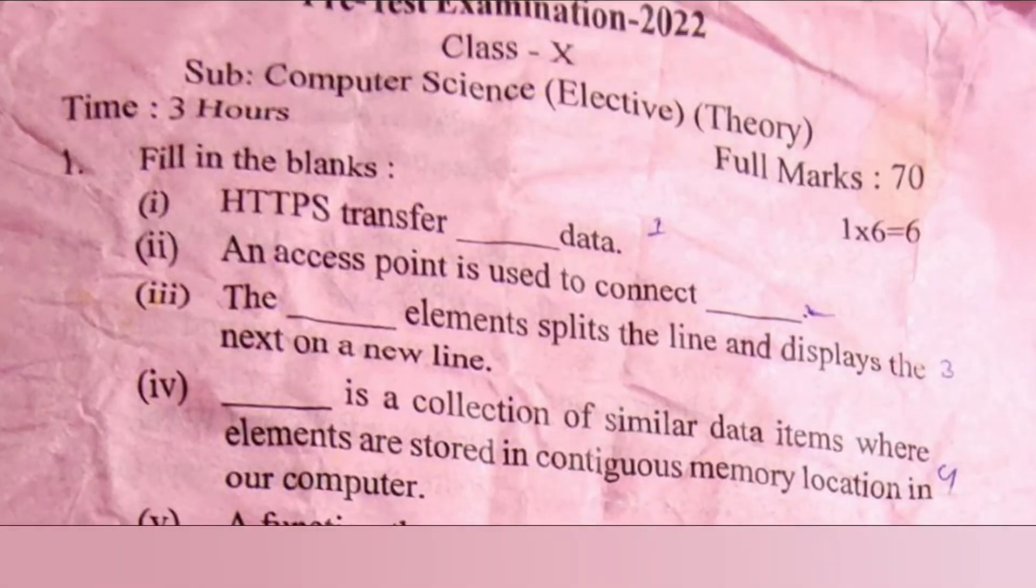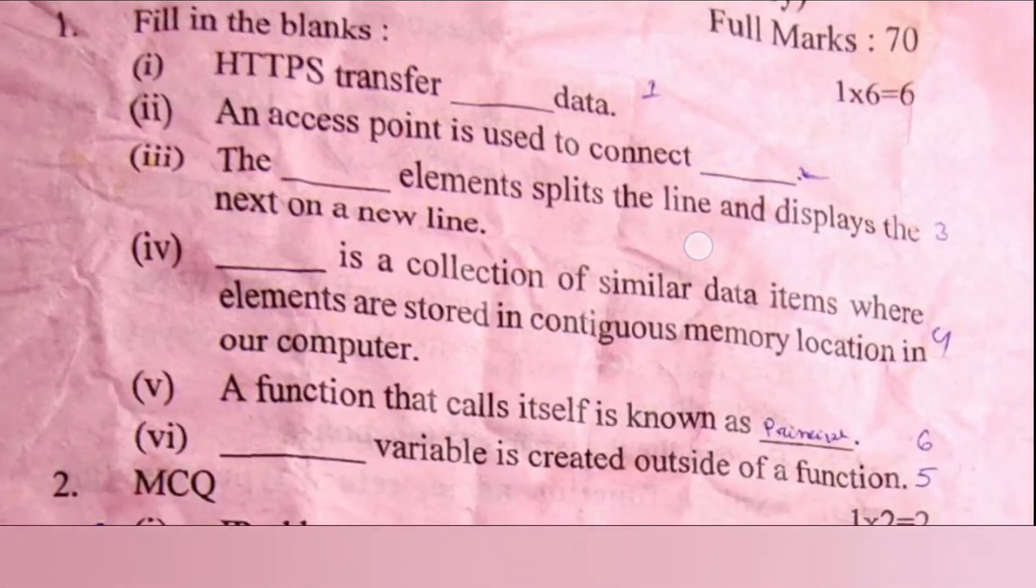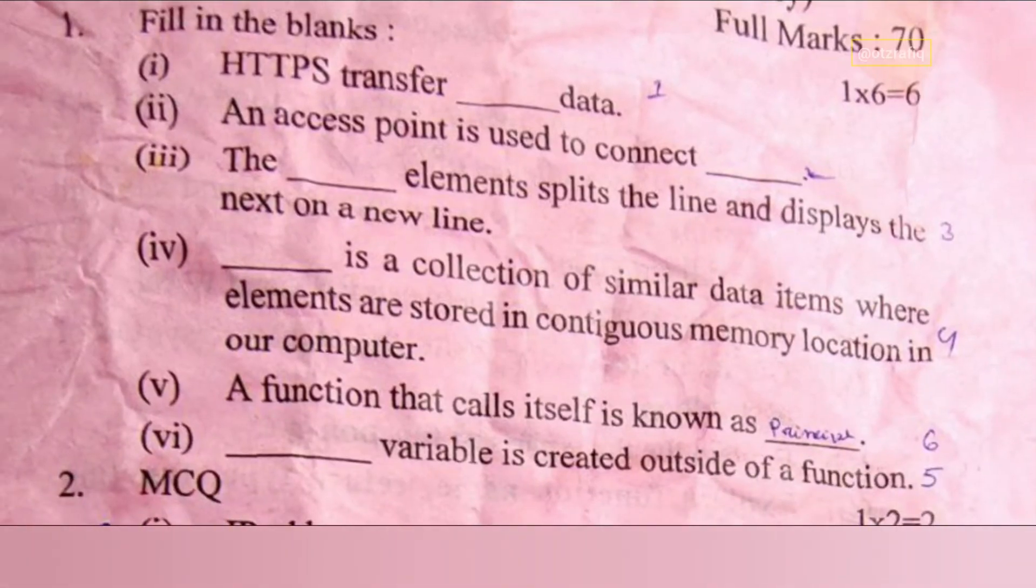Welcome to IT's Traffic. Here is the question paper of pre-test 2022 of Bongaigaon district, computer science. First questions: fill in the blank. HTTP transfer - the answer will be encrypted data. An access point is used to connect to our wireless network. The BR element splits the line and displays the next on a new line. It should be text.